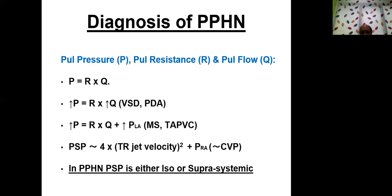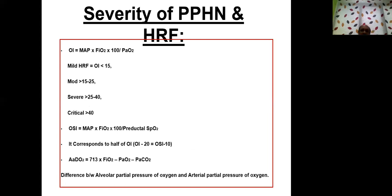On the bedside, the Oxygenation Index is a very useful tool to assess severity of pulmonary hypertension. It is calculated as mean airway pressure × FiO2 × 100 divided by arterial PaO2. It is classified as: mild ≤15, moderate 15-25, severe 25-40, and critically severe >40.